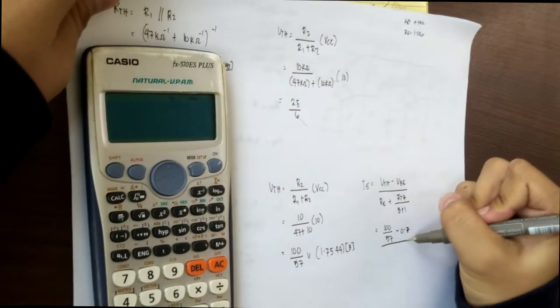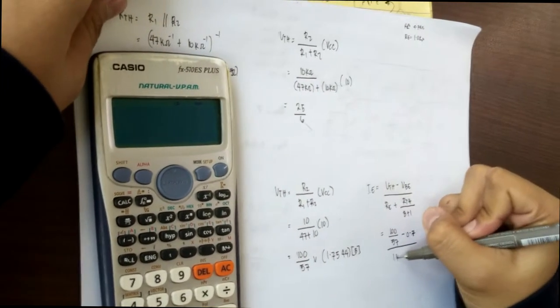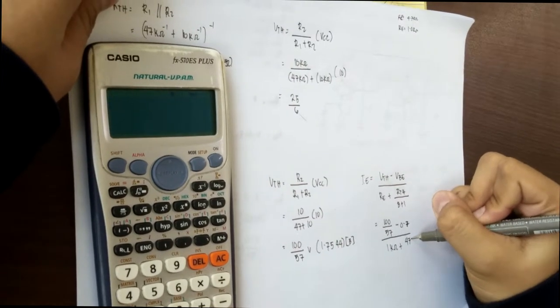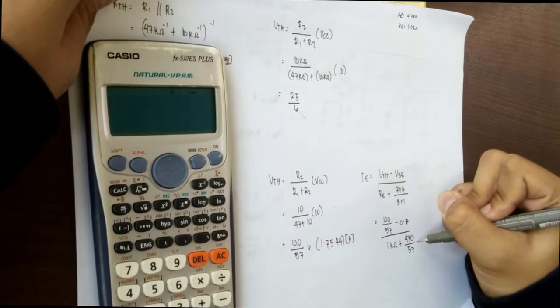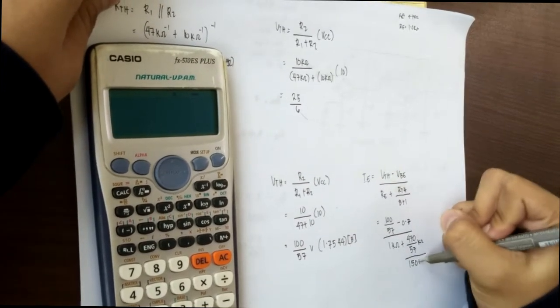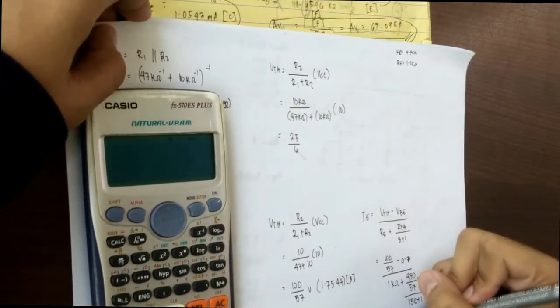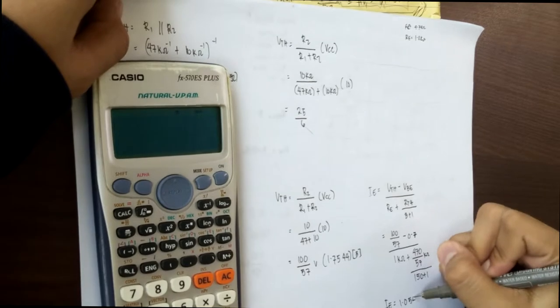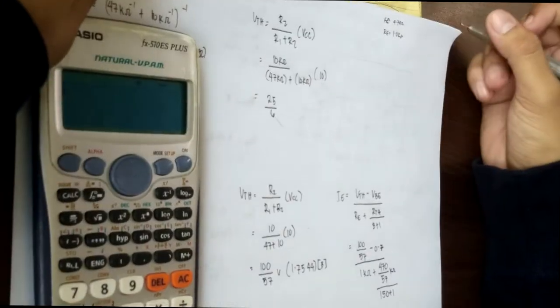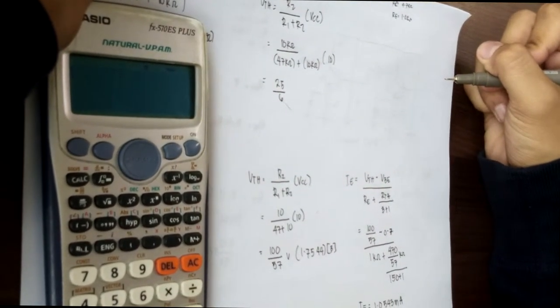Remember, use stored values for faster calculation. And lastly, we can solve for R'E which is equal to 26mV over IE.